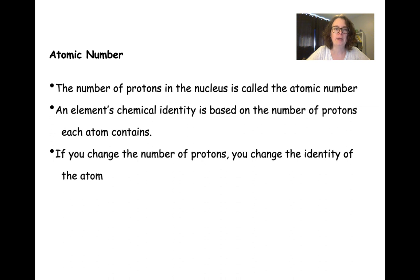Also in our periodic table is the atomic number, and the atomic number is defined by the number of protons that are in the nucleus. Every element has a different number of protons, and that element's chemical identity is based on that. So our chemical identity is based on the number of protons each atom contains. If you change the number of protons, you change the identity of the atom.